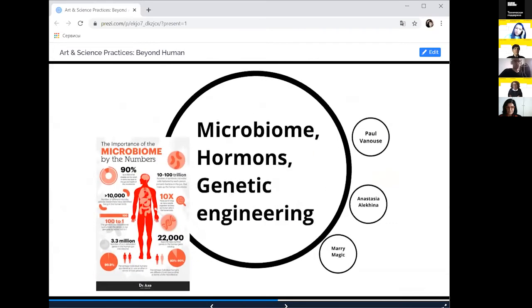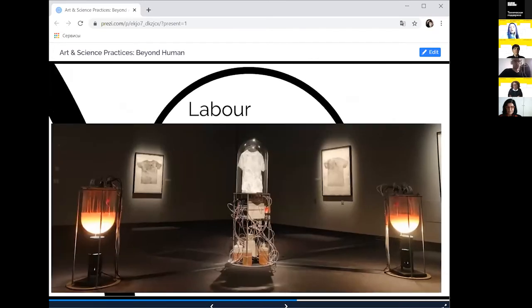The first project is a project by Paul Vanouse, Labor. In this project, artist points out the question, what does labor smell like? Labor is a dynamic, self-regulating art installation that recreates the scent of people exerting themselves under stressful conditions. There are, however, no people involved in making the smell. It's created by bacteria, which are in these bioreactors. And actually, here we can talk of new understanding of human and unhuman. What is human if the smell of sweat is produced by our microbiome, bacteria?